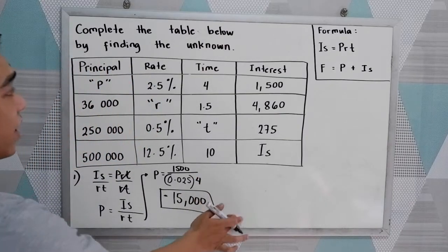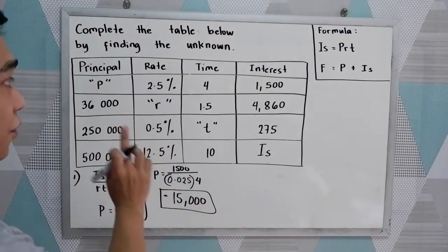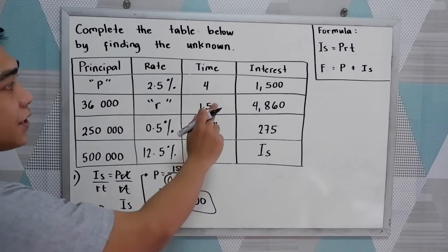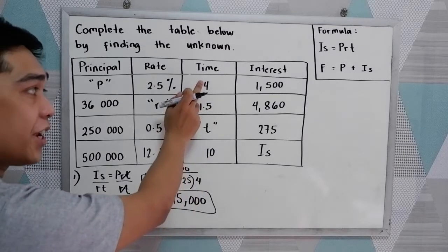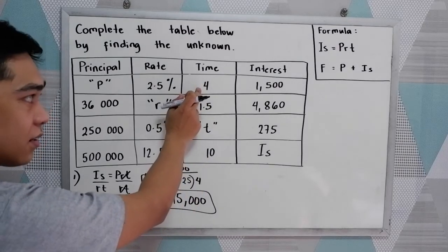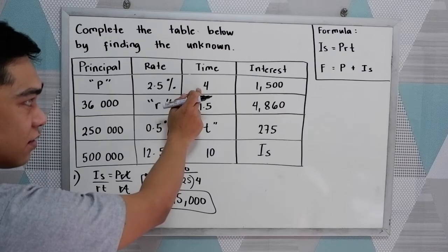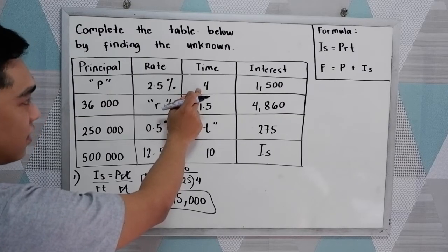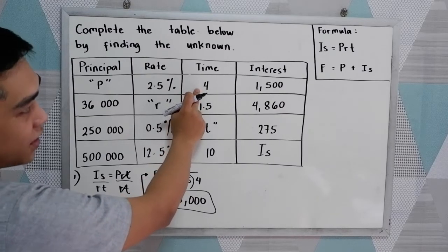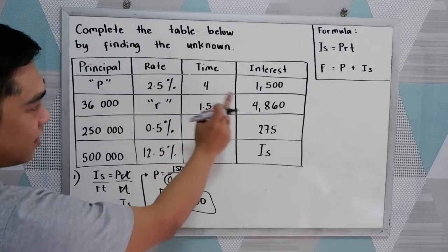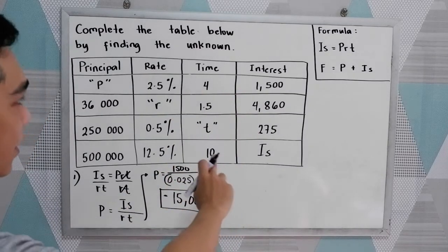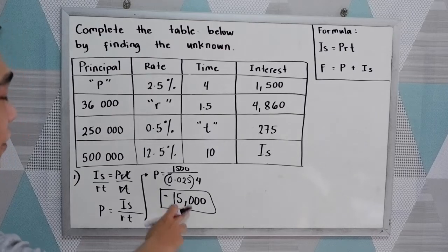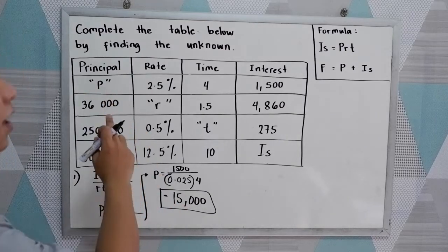With an interest rate of 2.5% after 4 years, given the interest of 1,500, we have 15,000 as the principal.